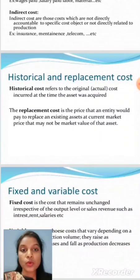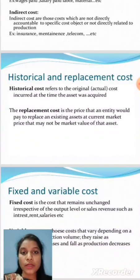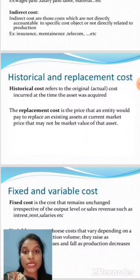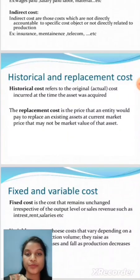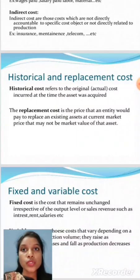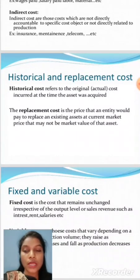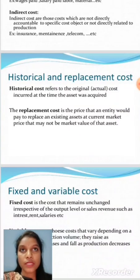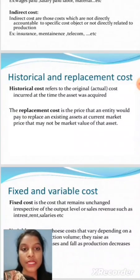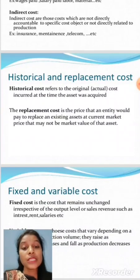Next, historical and replacement cost. Historical cost refers to the original or actual cost incurred at the time the asset was acquired. For example, during the purchase or acquisition of a building, any cost incurred at that time — the original or actual cost — is considered as historical cost.